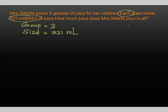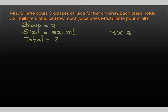How much juice does Mrs. Gillette pour in all? That means we have to find the total. If we have to find the total, then it's a multiplication number sentence. So the number sentence will be 3 times 321 equals what? The meaning of 3 times 321 is three groups of 321. Let's do it as a repeated addition: 321 plus 321 plus 321.